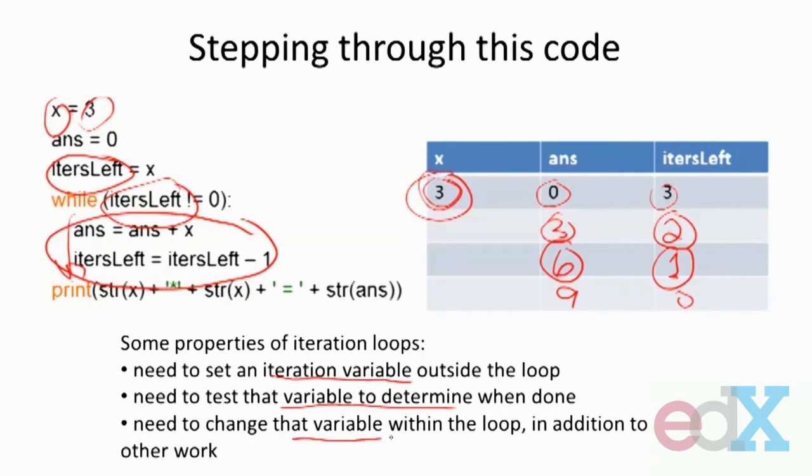And finally, I need to be changing that variable inside of the loop, right there. If I didn't, then that test value would never change, which means I would never stop the loop. But there's a property I need. When I set up an iterative loop, I need to say, what's the variable I'm setting outside? How am I testing it? And am I making sure to change it somehow inside of the loop in order to ensure that I get the pieces that I want?